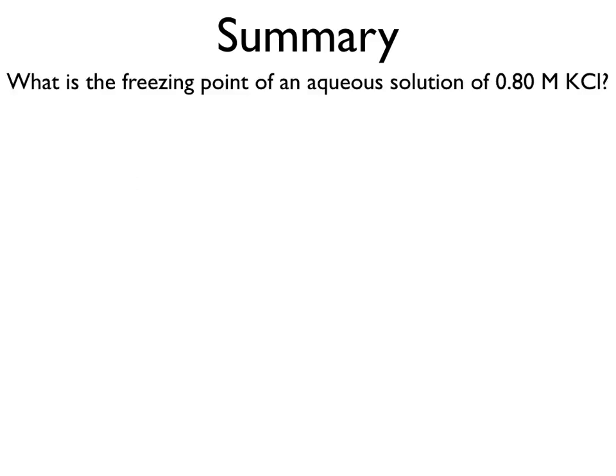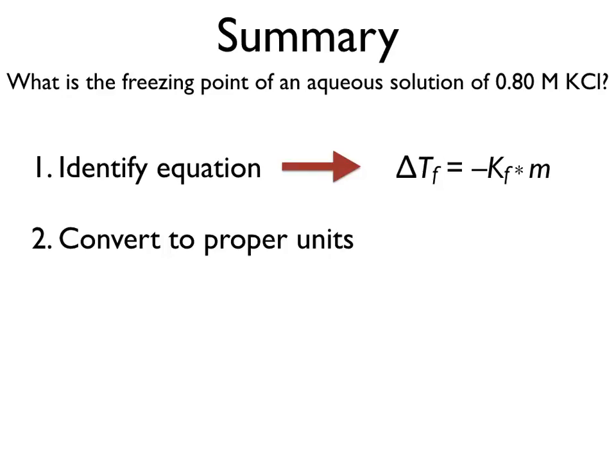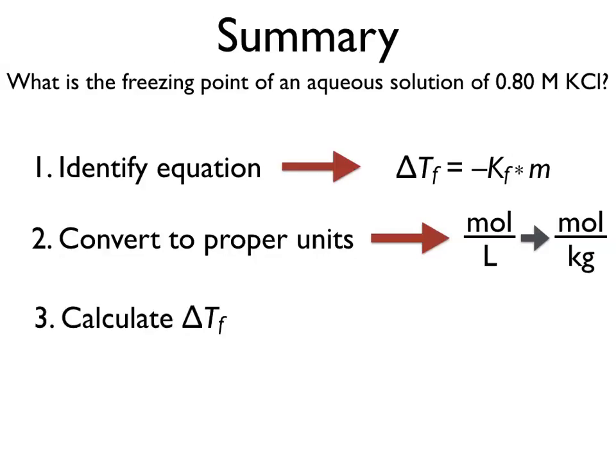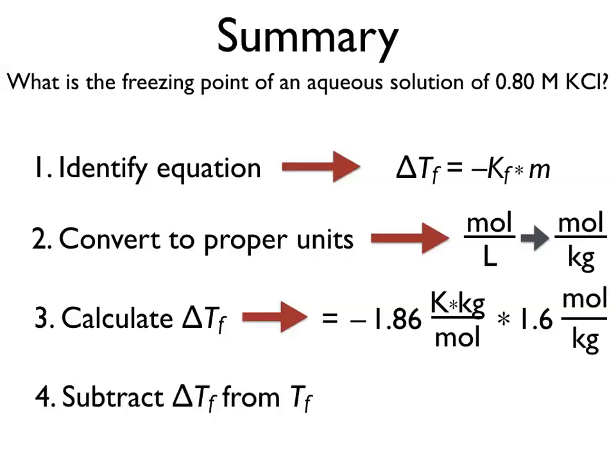So in conclusion, if we're asked the freezing point depression of a 0.80 molar concentration of KCl, we first need to identify the equation for freezing point depression, which is based on that constant and the molality. We need to convert our factors to proper units, which means taking molarity and going to molality. We need to calculate the extent to which our freezing point is depressed, and then we subtract that depression from our initial freezing point to get a new freezing point.